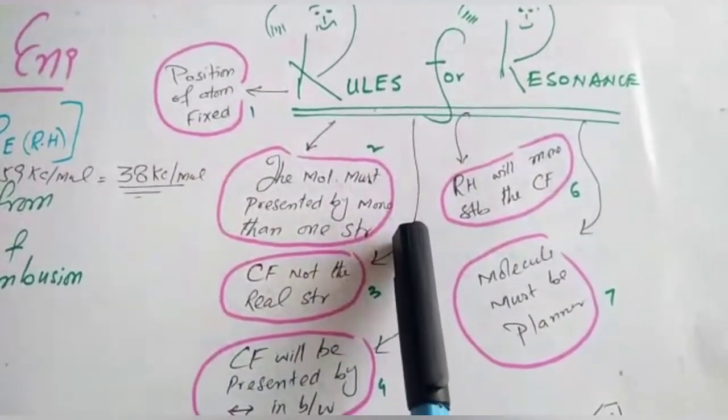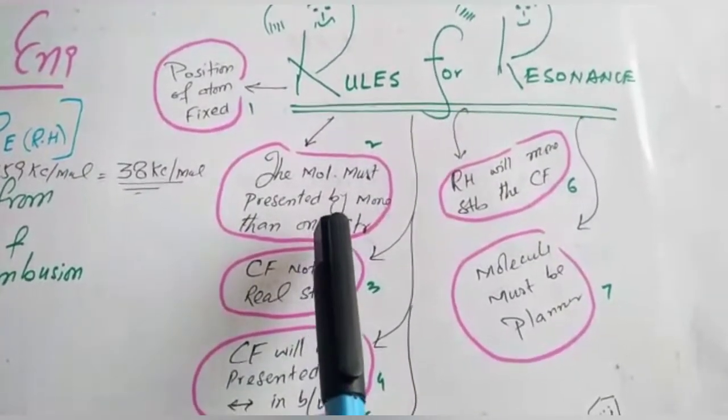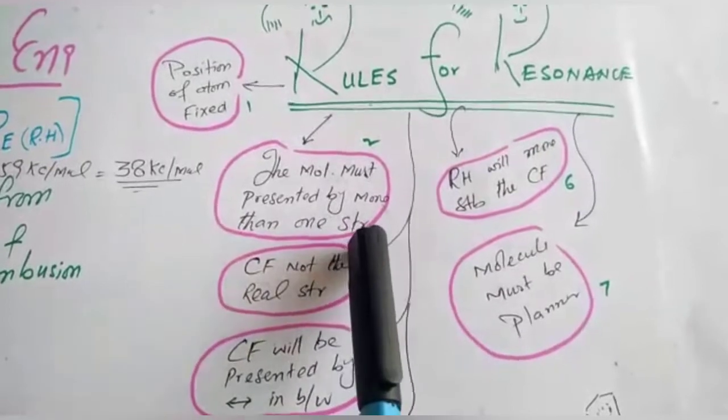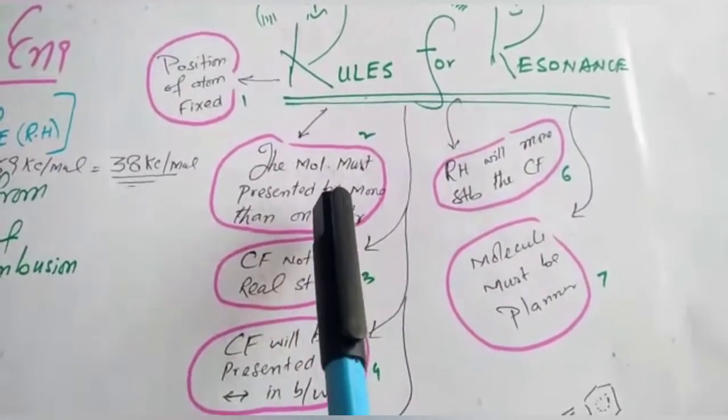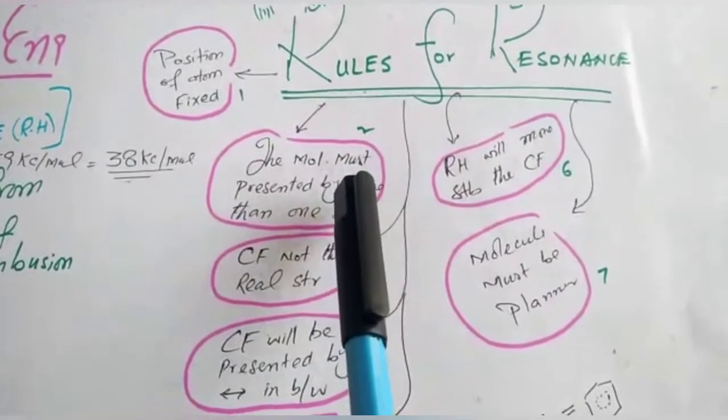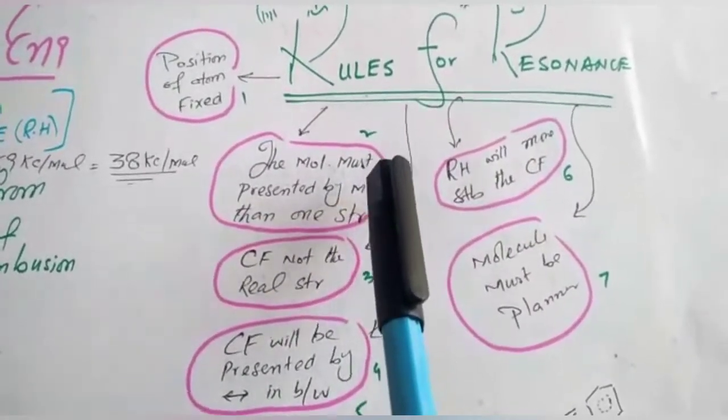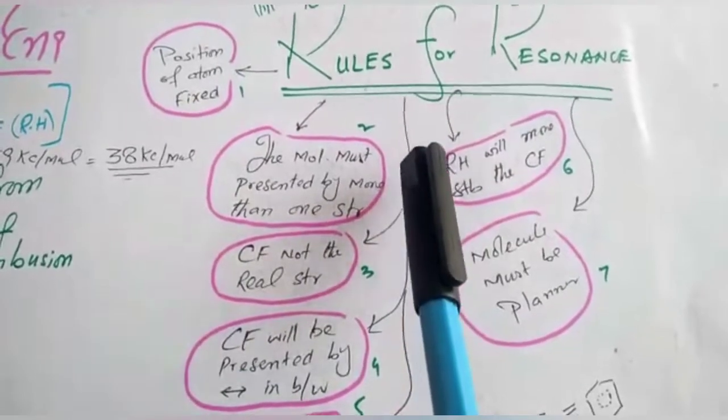Number second, the molecule must be presented by more than one structure. It means there must be delocalization and that delocalization of pi electrons will be producing various possible structures.